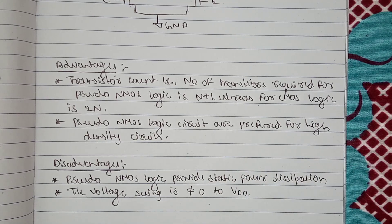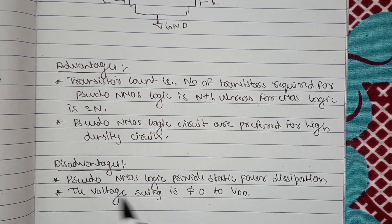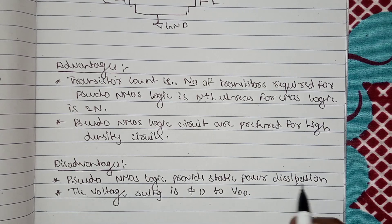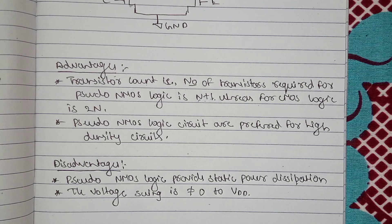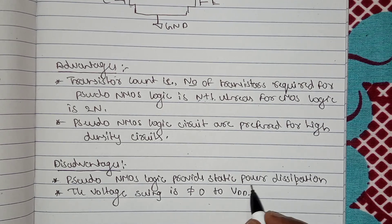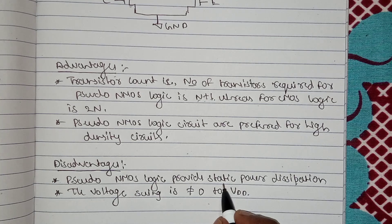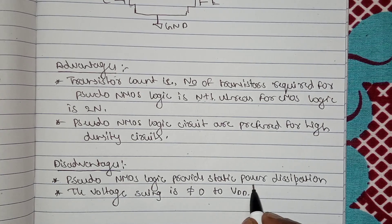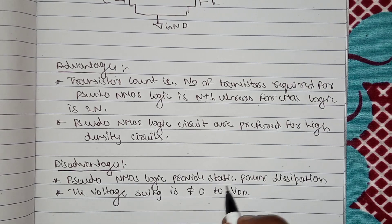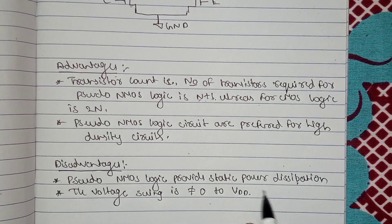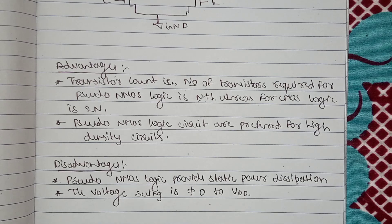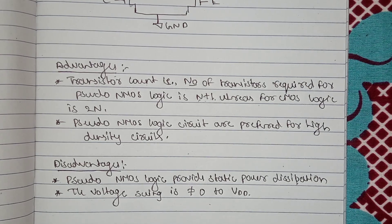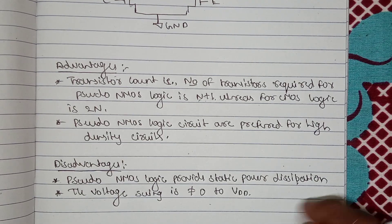The disadvantages of pseudo NMOS logic: first, it provides static power dissipation. This is the main disadvantage. Static power dissipation differs from dynamic power dissipation. The second disadvantage is that the voltage swing is zero to not-equal-to VDD, meaning the output does not swing fully to VDD.